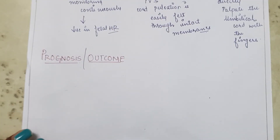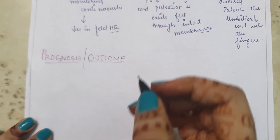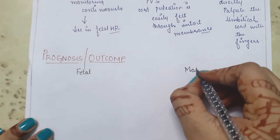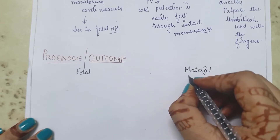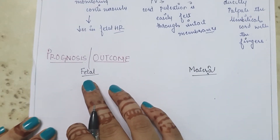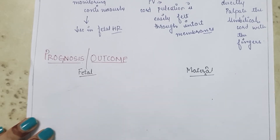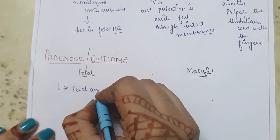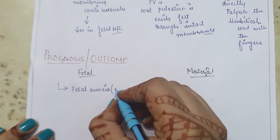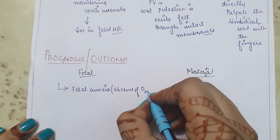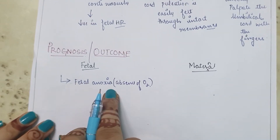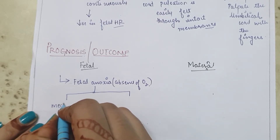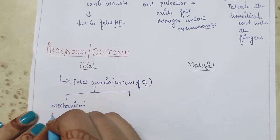Next is the prognosis or outcome of cord prolapse. In the case of the fetus, from the moment cord prolapse occurs, the risk of fetal anoxia increases. Anoxia means absence of oxygen. The risk of fetal anoxia arises first because of mechanical compression by the presenting part.